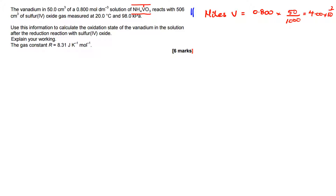Now we work out the moles of sulfur dioxide. Using the ideal gas equation rearranged for moles: n = PV/RT. Substituting in those values — I'll let you do that yourself — gives 2.04 × 10⁻² moles.